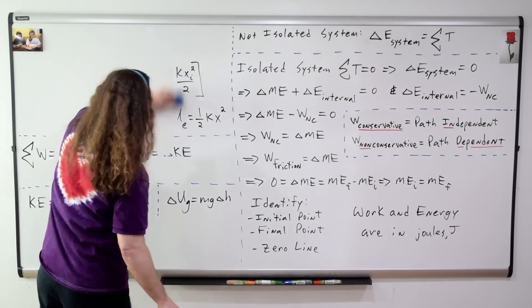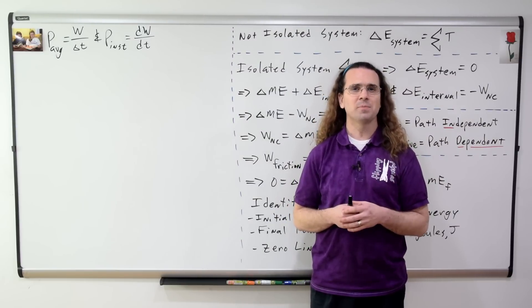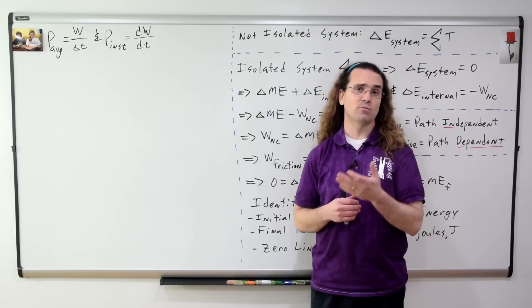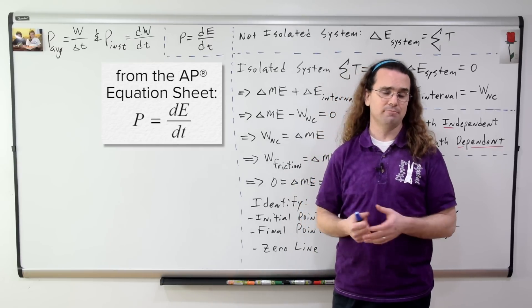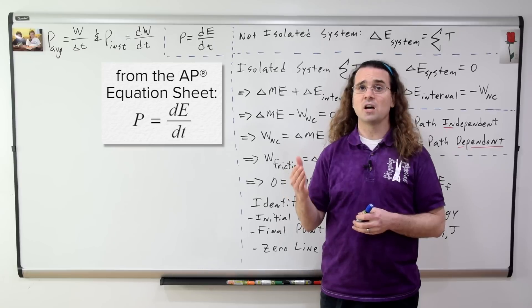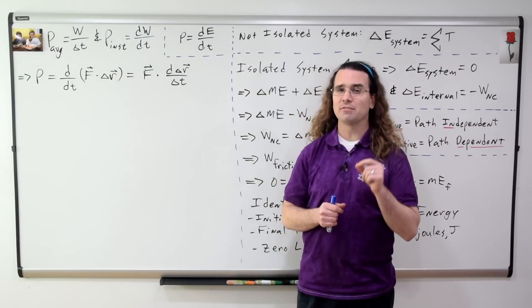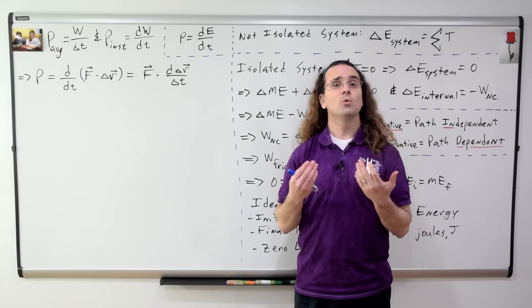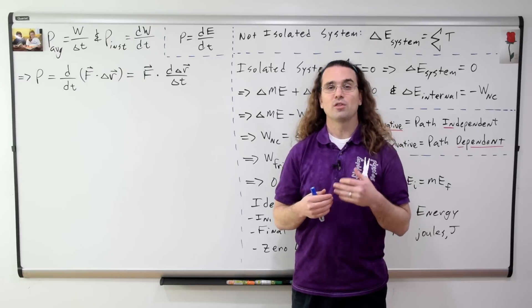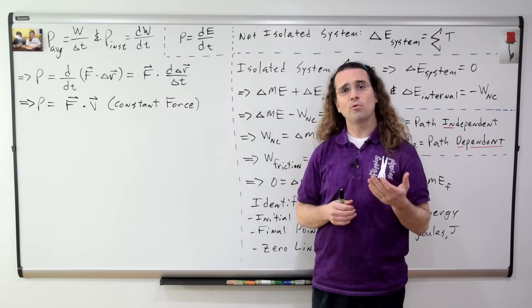Now let's talk about power. Power is the rate at which work is done. Average power equals work over change in time, and instantaneous power equals the derivative of work with respect to time. On the AP equation sheet, power equals the derivative of energy with respect to time. Substituting the equation for work done by a constant force, we get the derivative of the dot product of force and displacement with respect to time. Since force is constant, this is just the derivative of position with respect to time, which is velocity. Therefore, the power delivered by a constant force equals the dot product of force and velocity.